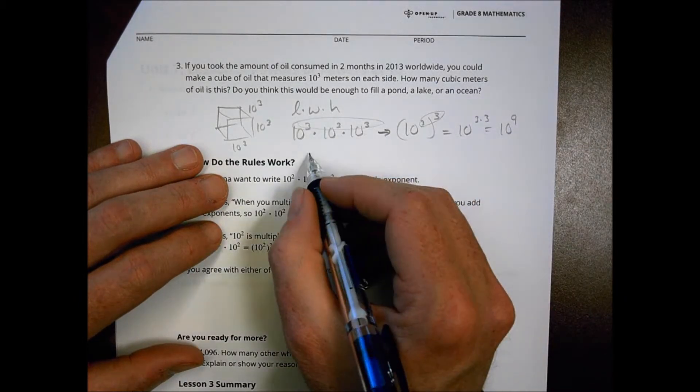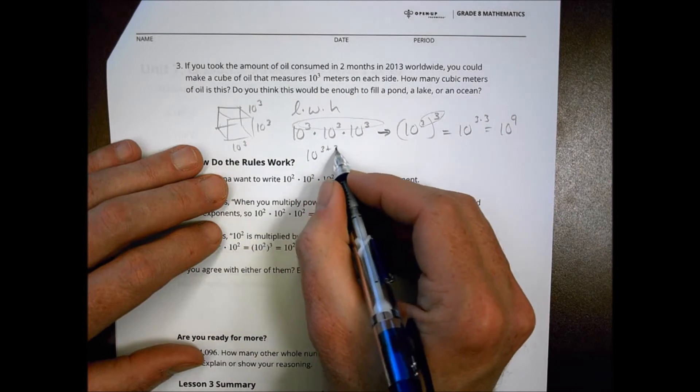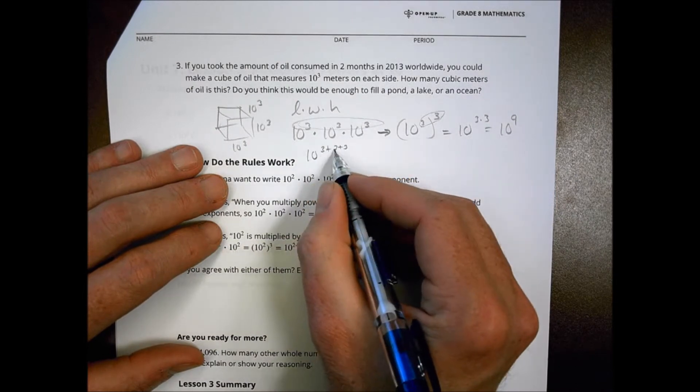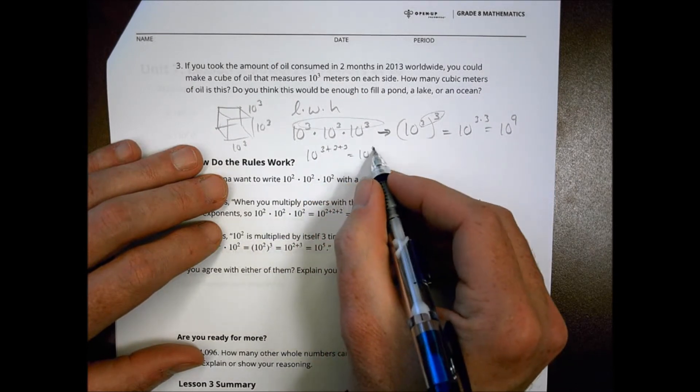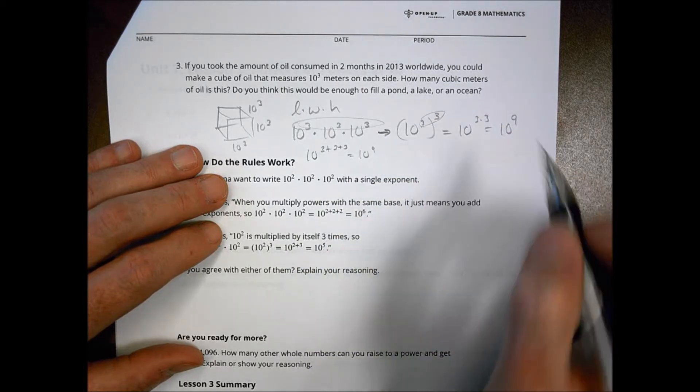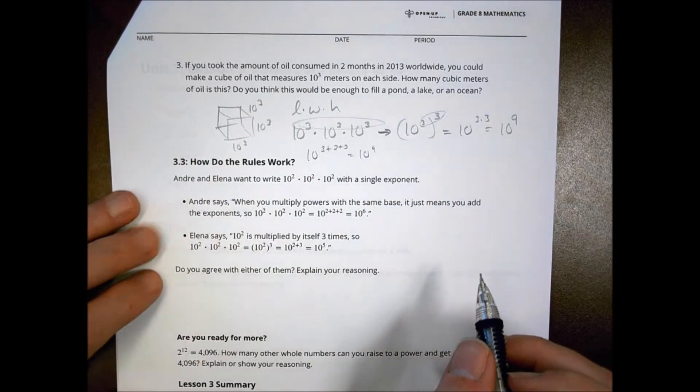What we're saying today is this can also be written as 10 to the third and doing that three times. So what is three times three, which becomes 10 to the ninth power. Does this work to add them up? What is 10 times three plus three plus three? Three plus three is six plus three is nine. You still get to the ninth power. But with our lesson today, we're trying to show that you can make it exponential.